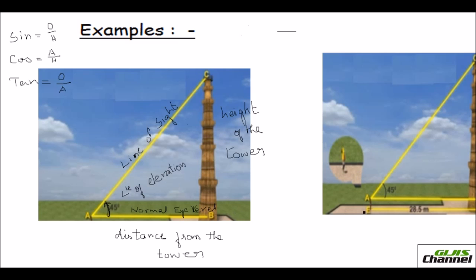Look at the next picture. In the first one, the person's height is not mentioned — they just say he looks up at the tower and is a certain distance away. If the height of the person is not mentioned, you just ignore it. To calculate the height of the tower, you only find the height from the ground to the top.